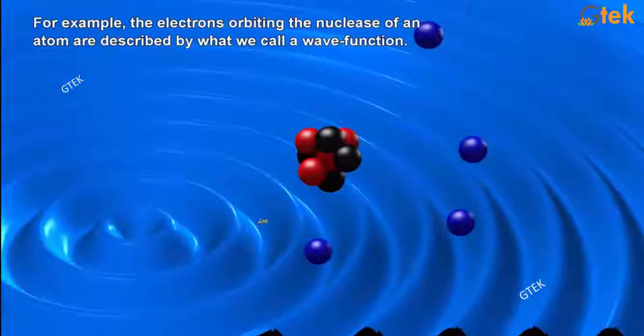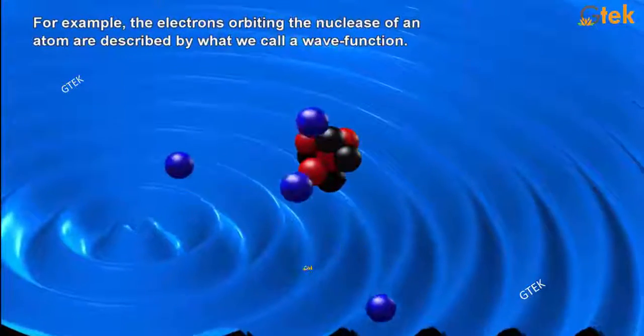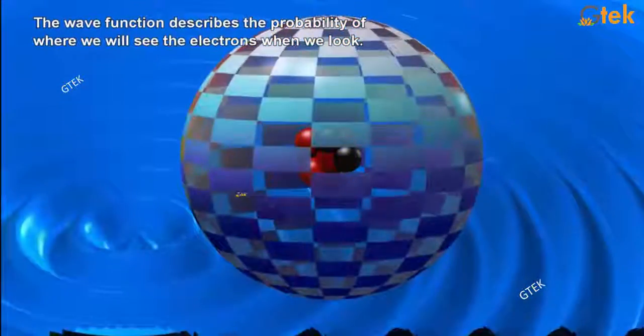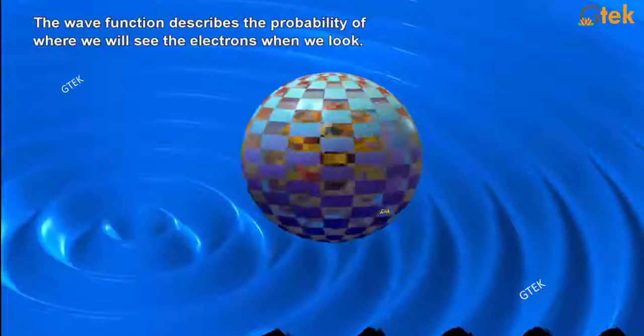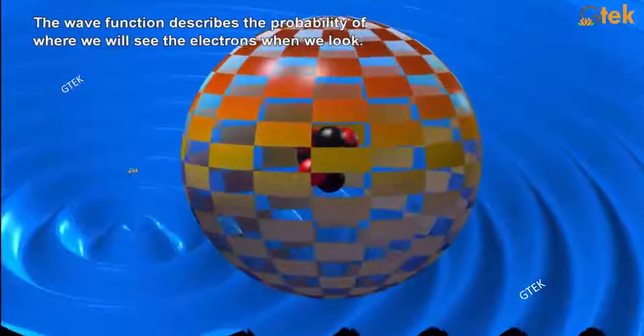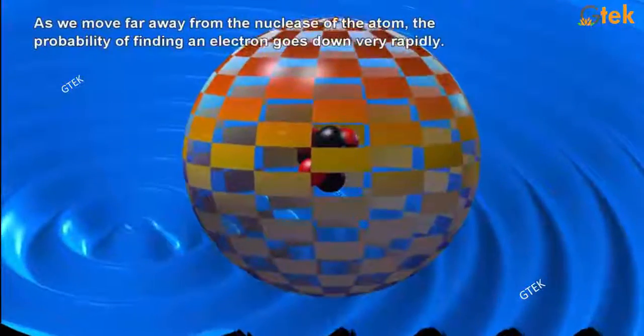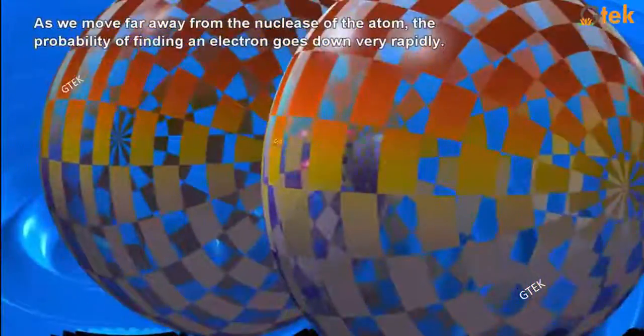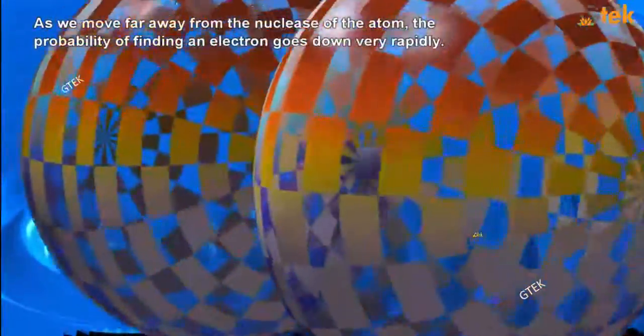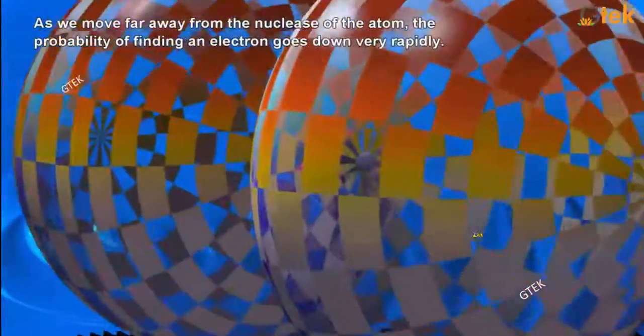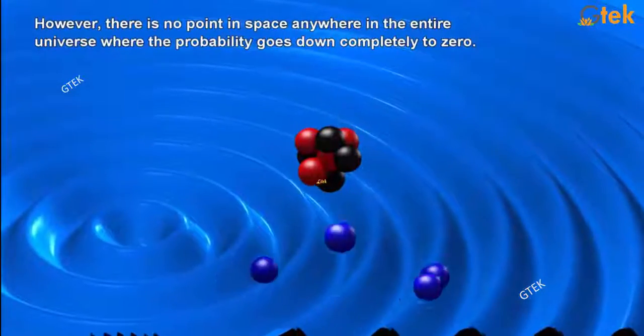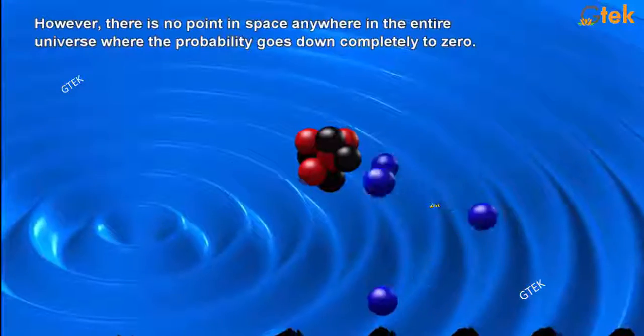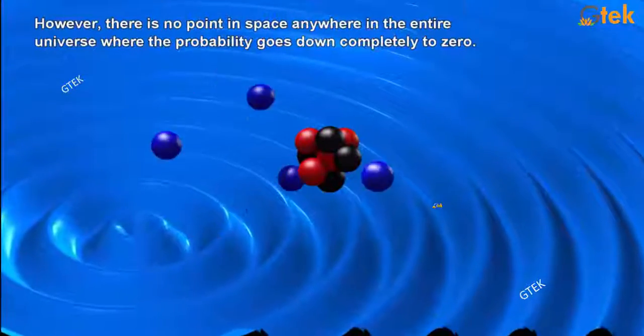The wave function describes the probability of where we can see the electron when we look. As we move far away from the nucleus of the atom, the probability of finding an electron goes down very rapidly. However, there is no point in space anywhere in the entire universe where the probability goes down completely to zero.